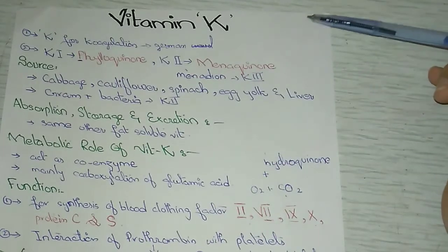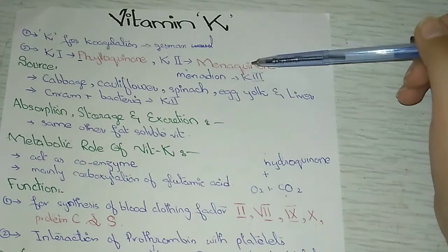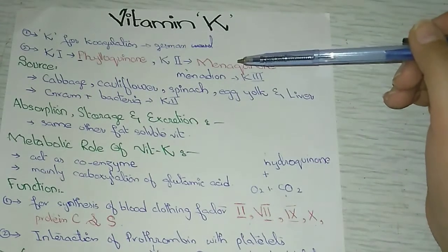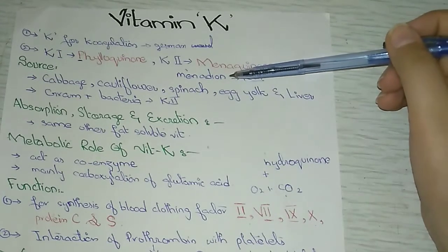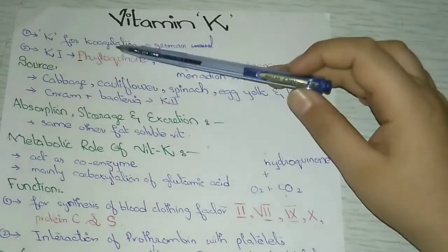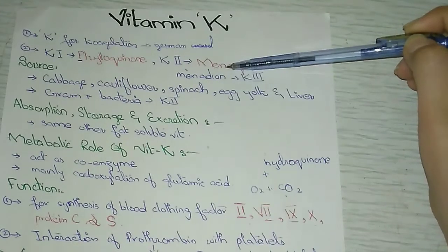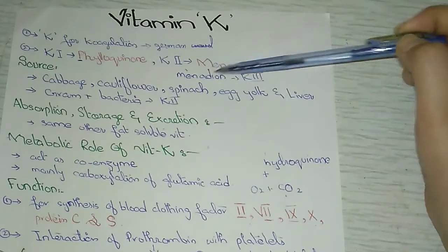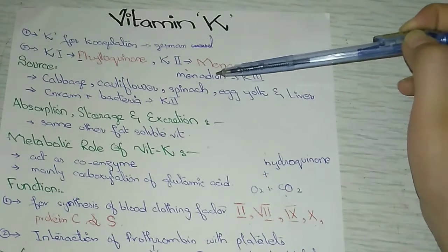Assalamu alaikum guys, hope you are all fine. Today we're going to talk about vitamin K. In this lecture we're going to cover source, absorption, storage, excretion, metabolic role, function, deficiency, and toxicity of vitamin K. K stands for coagulation — coagulation is actually a German word. Vitamin K exists in two forms: in plants as phylloquinone or vitamin K1, and in intestinal bacterial flora as menaquinone or vitamin K2. Some books also mention vitamin K3, known as menadione, which is the synthetic form.